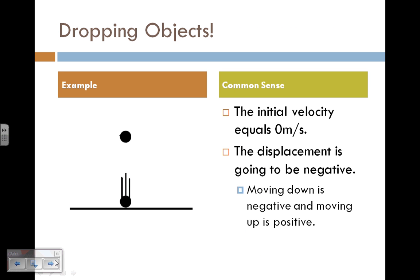For an object that is just dropped from a certain height, we can automatically know that the initial velocity equals 0 meters per second. In word problems, they might not tell you that for objects that are dropped—you just need to know that when an object is dropped, it had to have started at 0 meters per second.